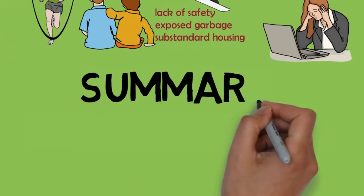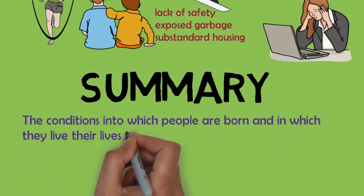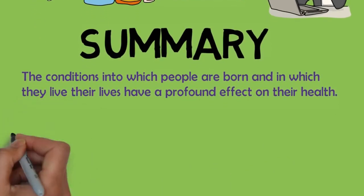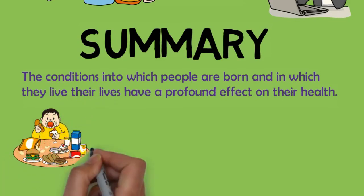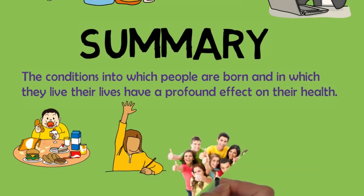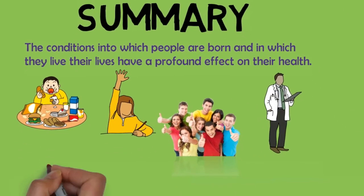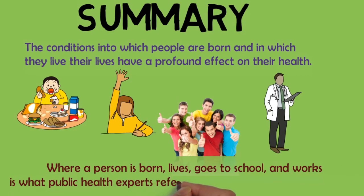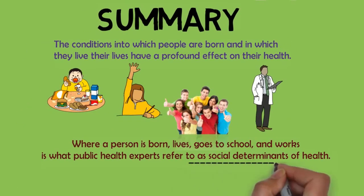In summary, the conditions in which people are born and in which they live their lives have a profound effect on their health. These factors influence the opportunities a person has to eat a nutritious diet, have a good education, live and work in a toxin-free environment, access health care, and more. Where a person is born, lives, goes to school, and works is what public health experts refer to as social determinants of health.